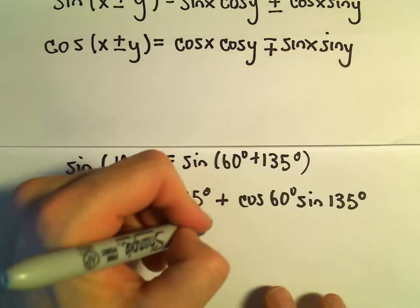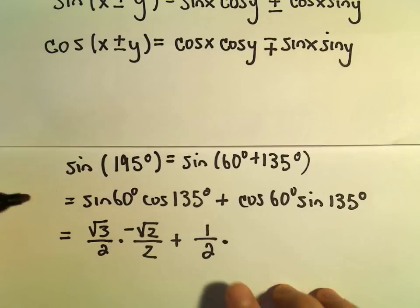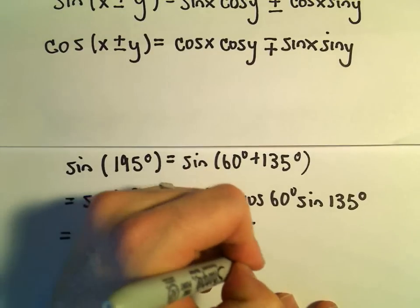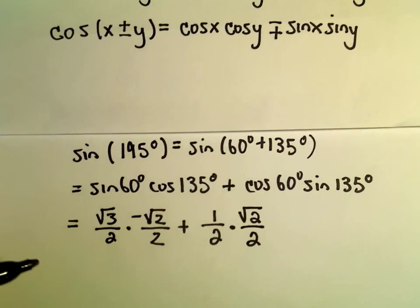Cosine of 60 degrees, that's going to give us 1/2. Sine of 135 degrees, that's going to be positive √2/2. And now we can just simplify this down.